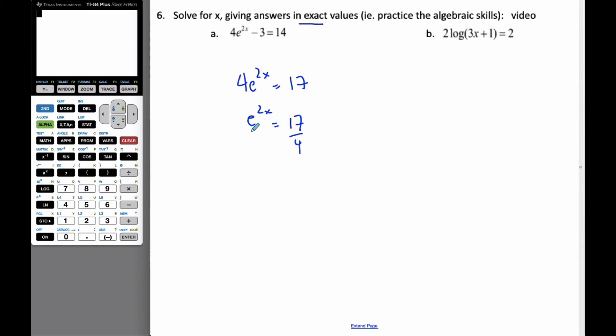And now I have to get rid of my e. In order to do it, I'm going to switch it to logarithm form. So the natural logarithm, log base e of 17 over 4, is equal to 2x. So x then, dividing by 2 both sides, is equal to 1 half ln 17 over 4. That's the exact value of x.